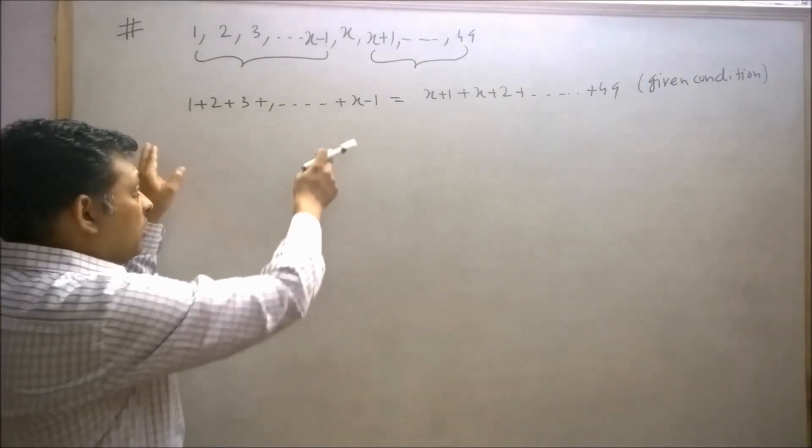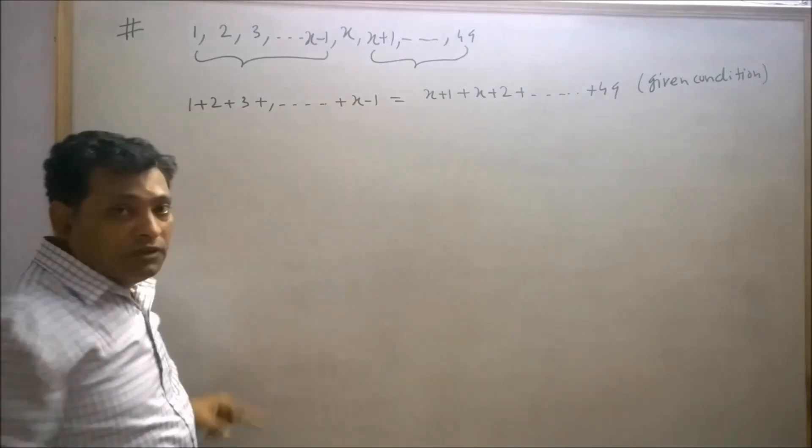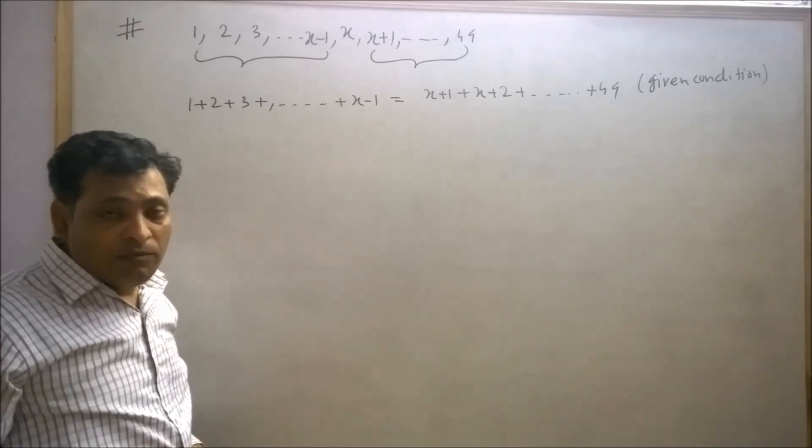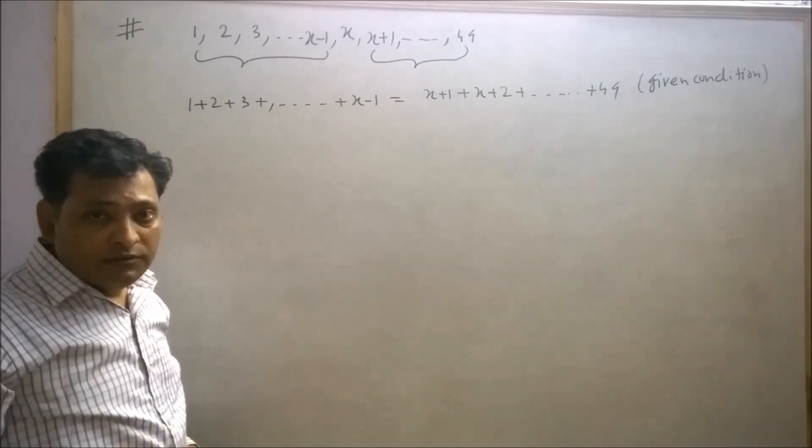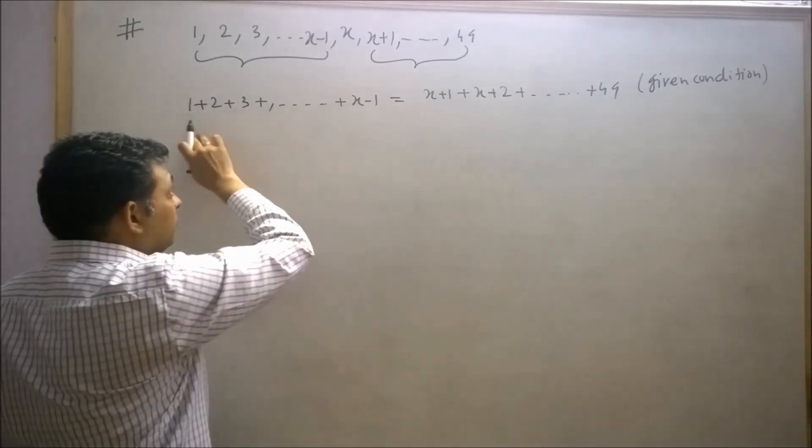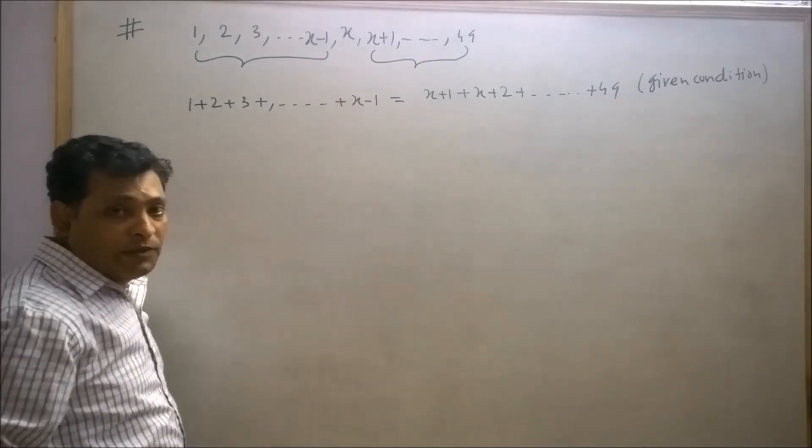Now, students, I would like to ask a question. How many terms are there? Definitely, your answer will be x-1 since the number of the houses are in natural numbers. So total number of terms are x-1 from 1 to x-1.